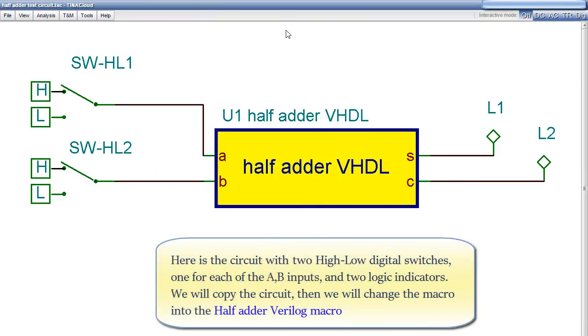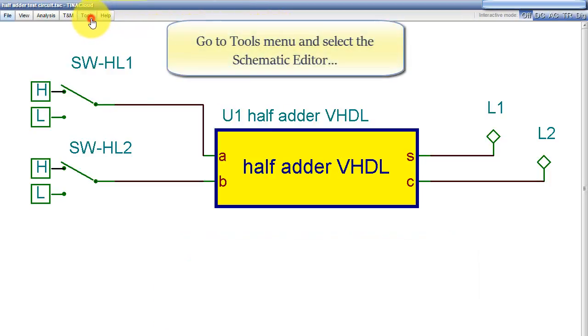Here is the circuit with two high-low digital switches, one for each of the A-B inputs and two logic indicators. We will copy the circuit. Then we will change the macro into the HalfAdderVerilog macro. Go to the Tools menu and select the Schematic Editor.